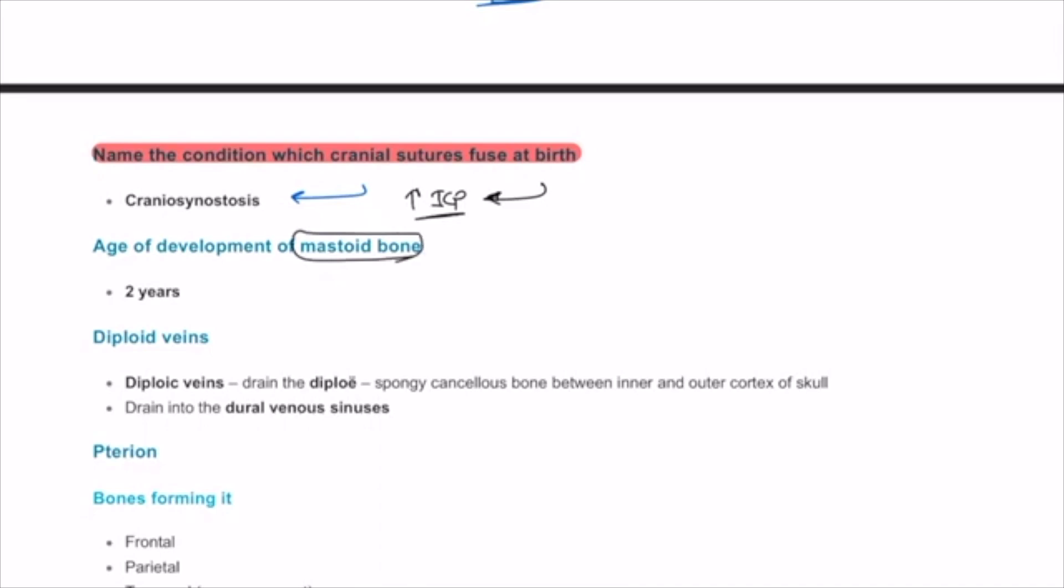Age to develop a mastoid bone, it's two years. It's two years for age of development.